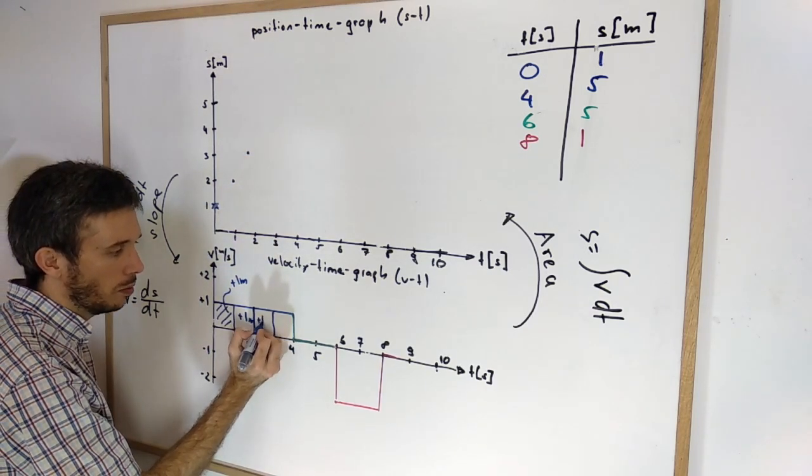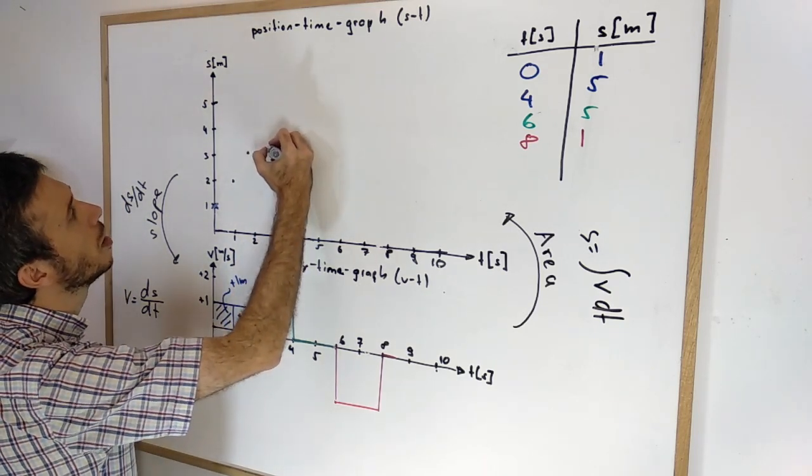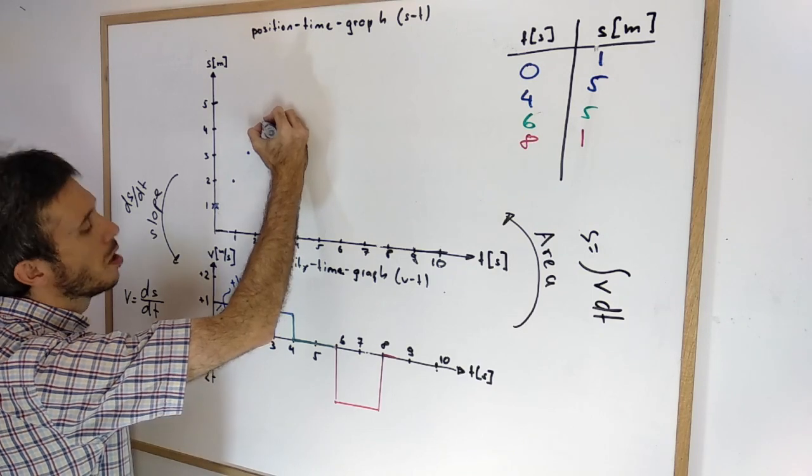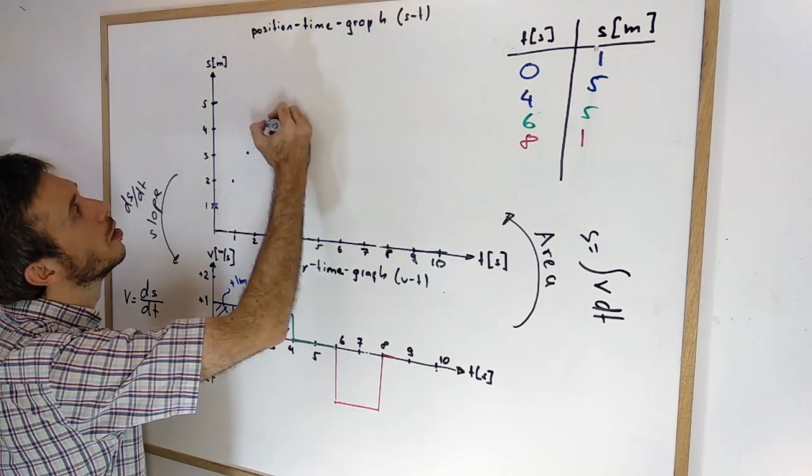If I go to 3 plus 1 meter again. So at 3 I'm at 4. And at 4 plus 1 meter again I'm at 5.